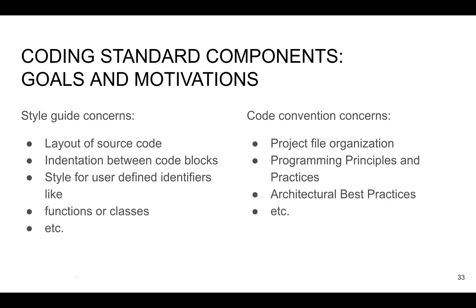Talking about coding standards, we can split them into two groups: style guide and code convention. What is a style guide? A style guide is mostly about the layout of source code — how you organize your code from a visual perspective. For example, indentation between code blocks: is it two spaces, four spaces, or tabs? Or for constants, are you using uppercase? How do you organize the names of your classes — is it uppercase or not? Everything is described in the style guide.